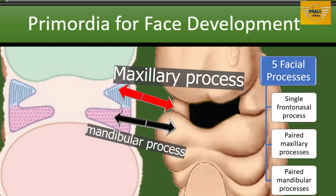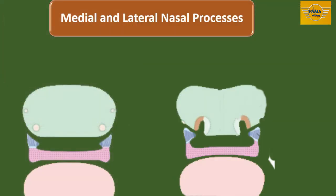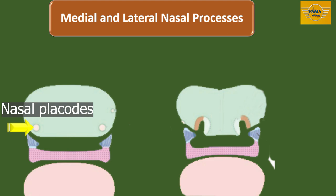We will now proceed to subsequent structures formed by these processes, starting with the frontonasal process. At the end of the fourth week, the ectoderm overlying the frontonasal process shows bilateral localized thickenings situated just above the stomatodeum on either side of the midline. These bilateral thickenings are called the nasal placodes and will give rise to the olfactory epithelium.